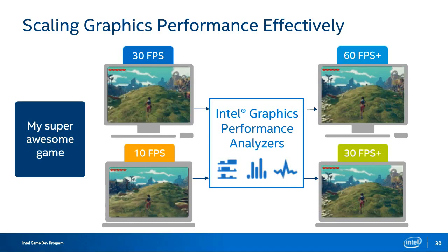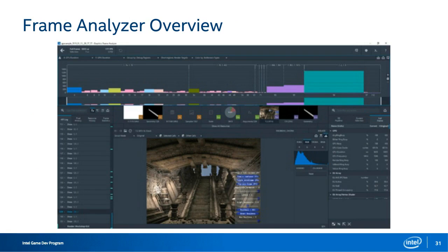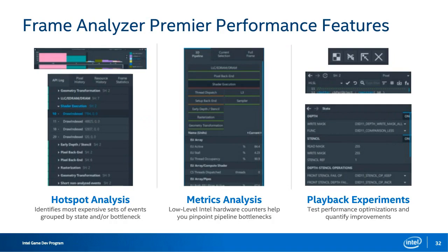Frame Analyzer is the bread and butter of GPA and will most likely be the only tool you'll use to profile your application. It's a debug and profiling tool that allows you to visualize, replay, and experiment with one captured frame from an application. You'll see API calls, shaders, resources, textures, and any other resources that go into building that captured frame. Keep in mind that when interacting with this frame, you will not be modifying your source code or affecting your original game in any way. Hotspot Analysis is the advice section of GPA — you can select any event from the bar chart to see what hardware bottleneck the event is experiencing and receive suggestions on how to fix it. Using Hotspot Mode, you can group all events by their state and bottlenecks, allowing you to profile the entire frame bottleneck by bottleneck and fix multiple inefficiencies at once.